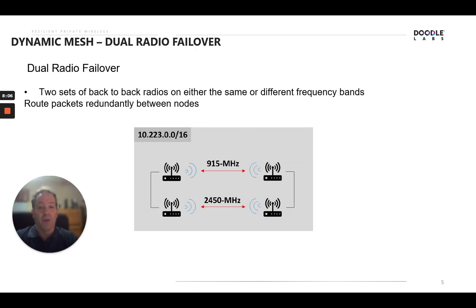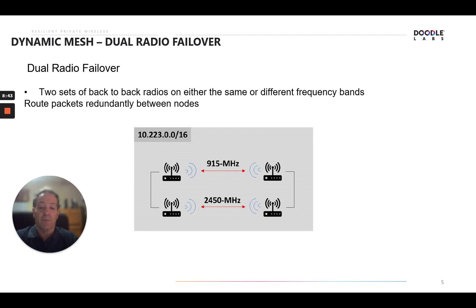Let's talk about the dual radio failover feature in dynamic mesh. You have two sets of radios — they can be on the same frequency or different frequencies; in our case, different frequencies. On each side of the link the nodes are connected back-to-back. You have two streams created, routing packets are done only between the nodes. There's a primary and a secondary stream determined based on the best route and best link. Should the primary be interrupted, transition to the secondary is seamless with no packet loss — pure redundancy with seamless transitioning.